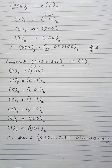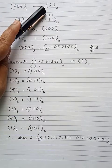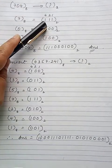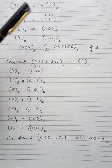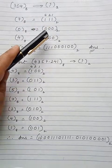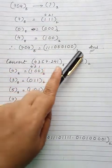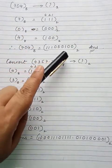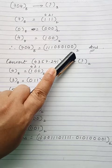Take another example: 704 base 8 is to be converted into binary. 7 in binary is 111, 0 is 000, and 4 is 100. Write them together: 111 000 100. This is the answer — that is all you have to do.